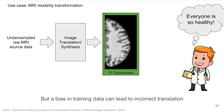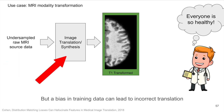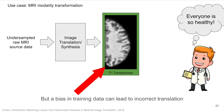Let's look at an example. Here the source domain is a signal from an MRI that was under-sampled to improve acquisition speed. Because of this the doctor cannot inspect the source image. A model transforms this data into the target domain desired by the doctor and the image looks realistic and healthy.